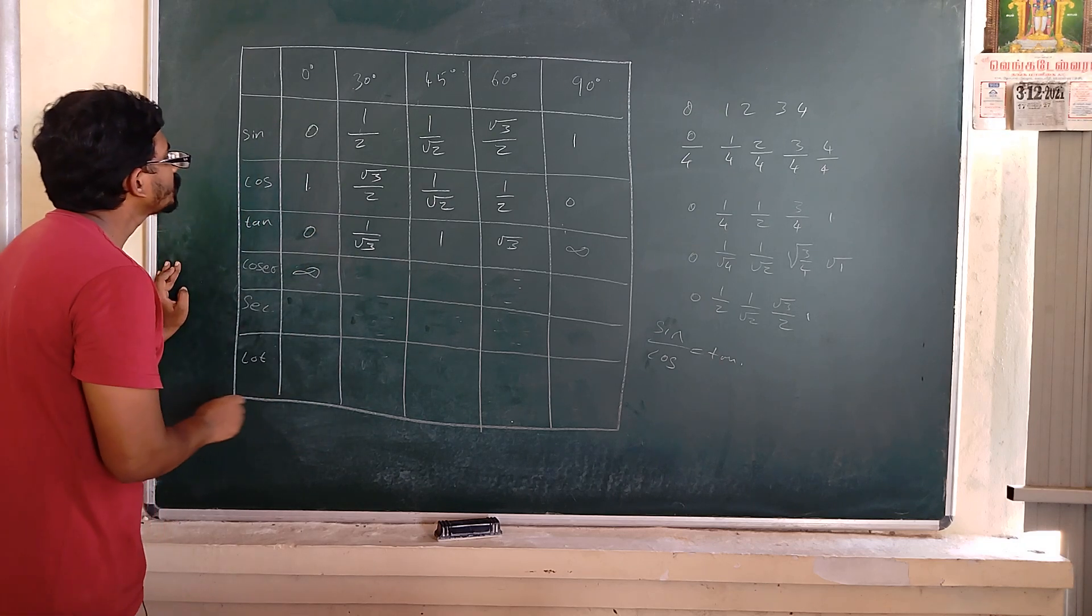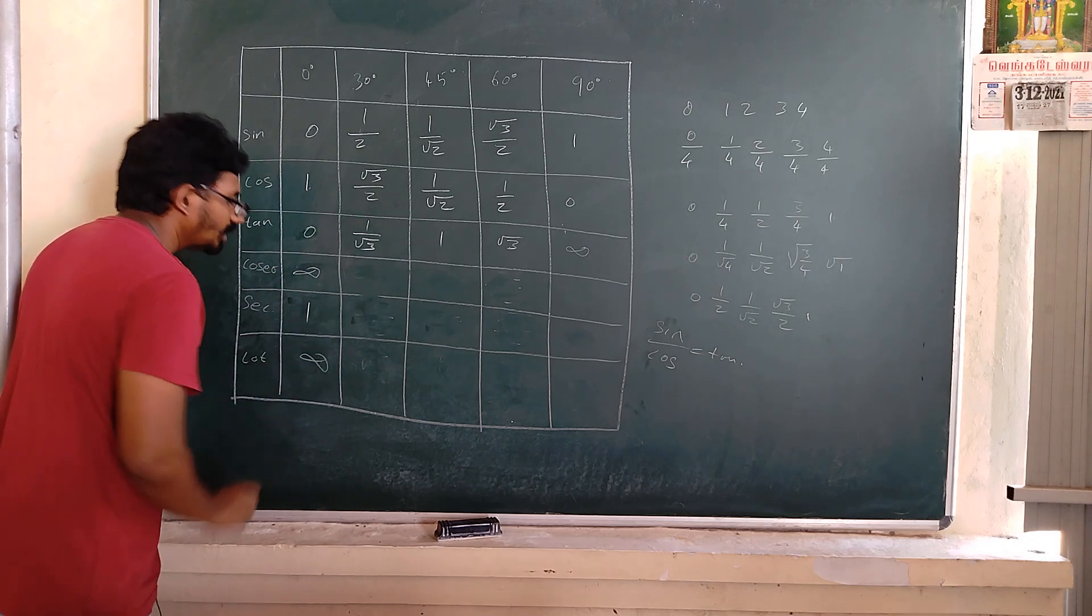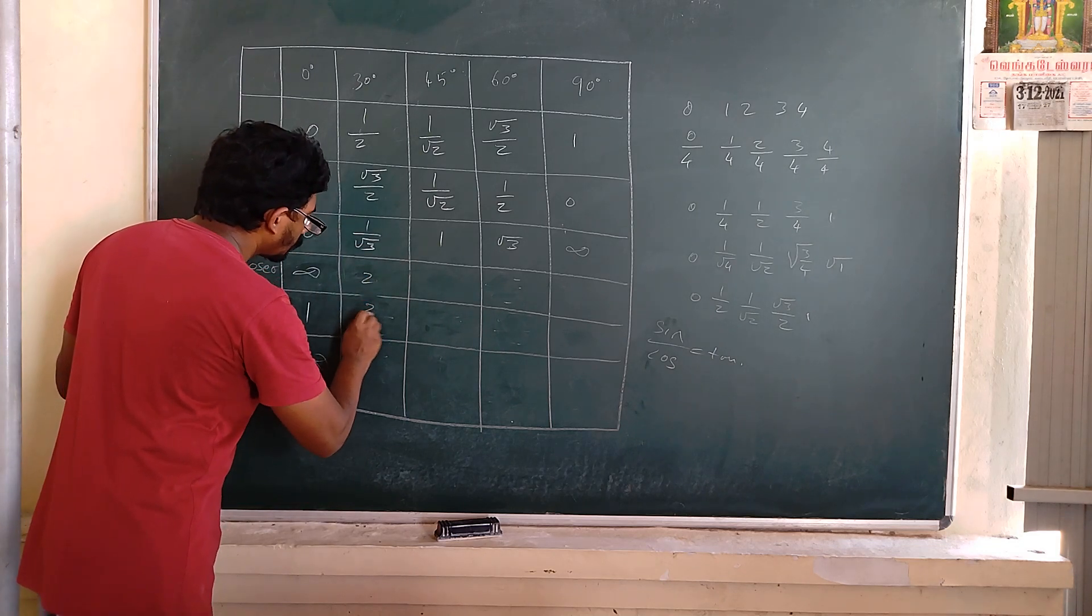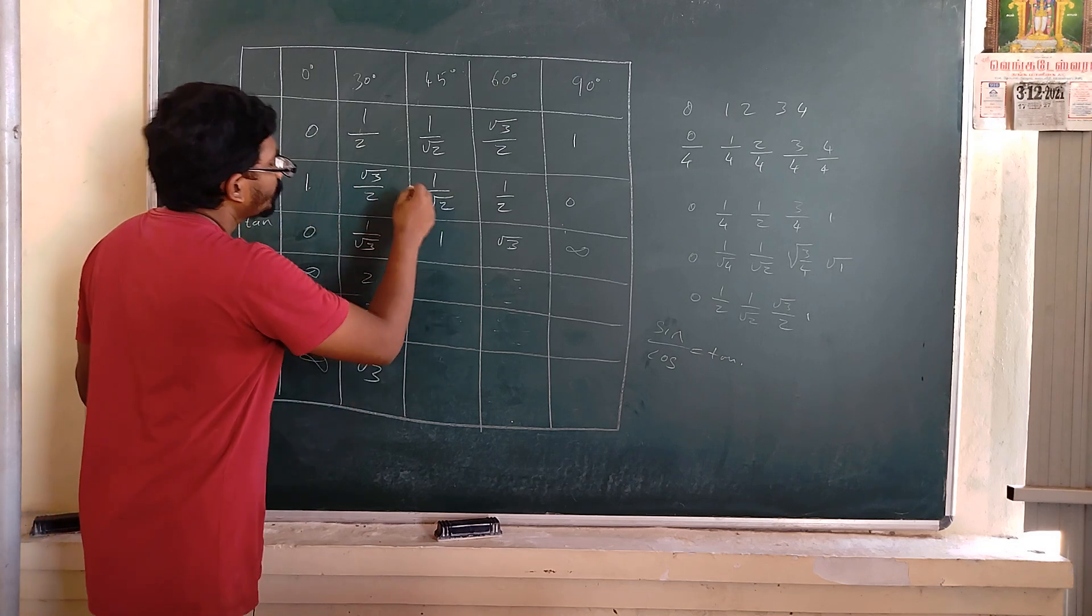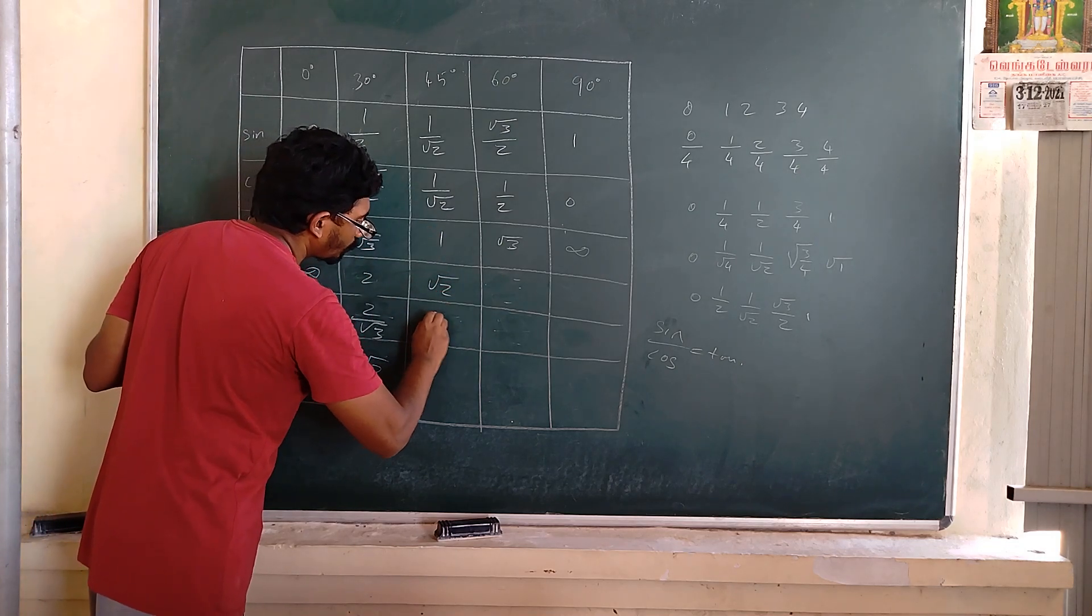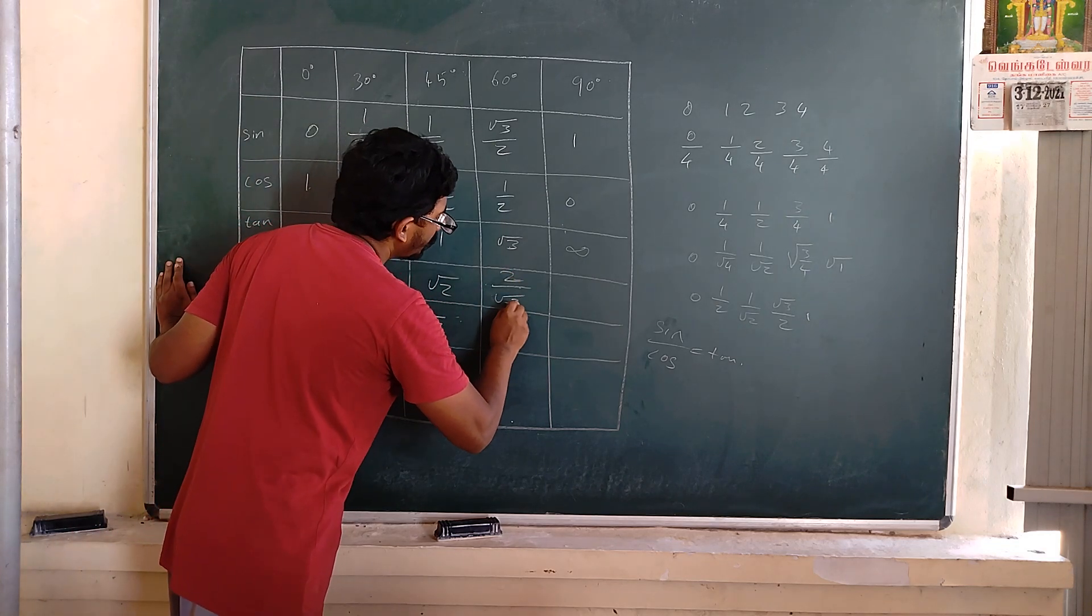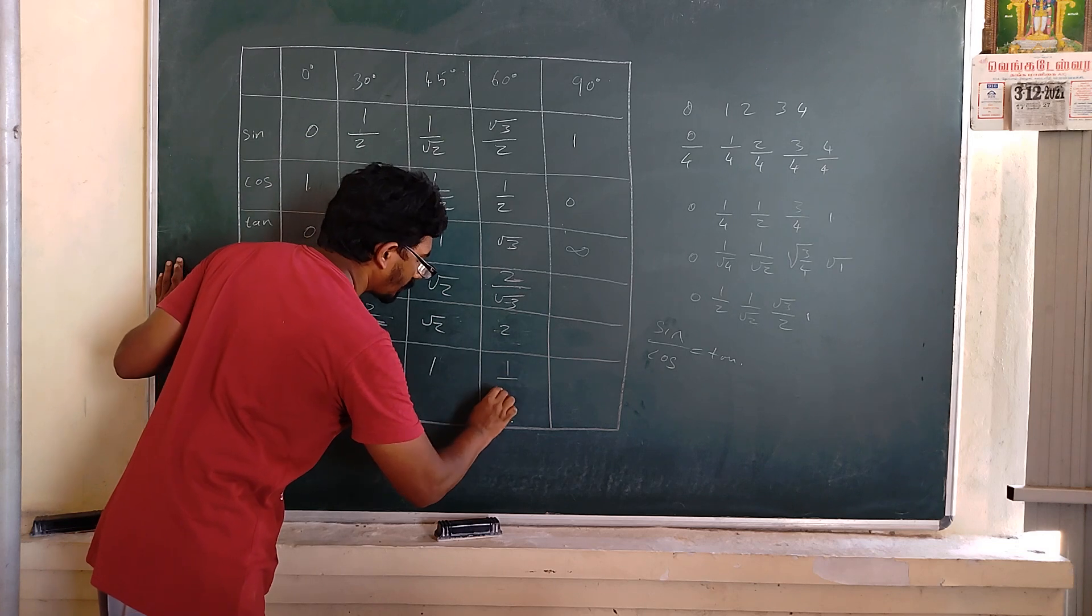1 by 1 is 1, 1 by 0 is again infinity or not defined. The reciprocal here is 2, 2 by square root of 3 and square root of 3, then square root of 2, square root of 2, 1, and 2 by square root of 3, then 2.